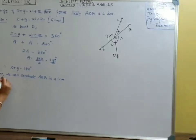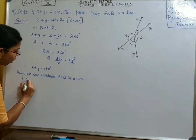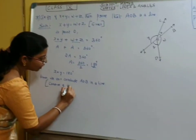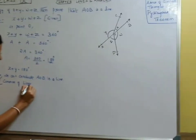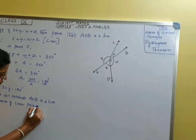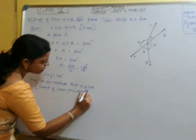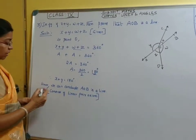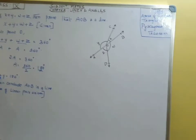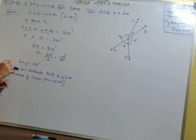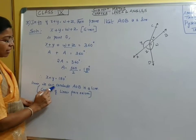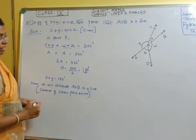By which axiom? By the converse of the linear pair axiom. What does the converse of linear pair axiom say? The converse of linear pair axiom says that if the sum of adjacent angles on a line is equal to 180 degrees, then we can say that the line is a straight line.